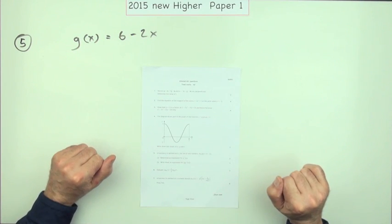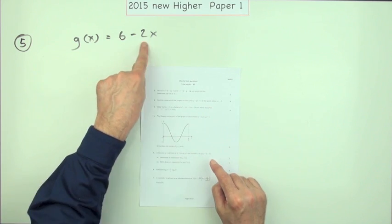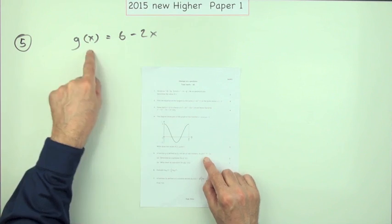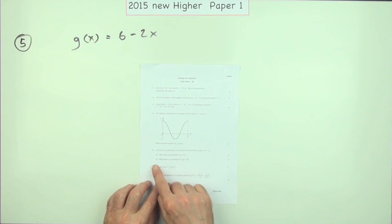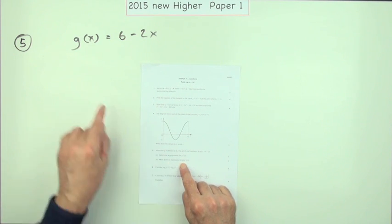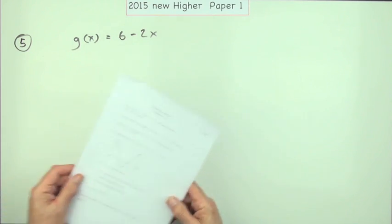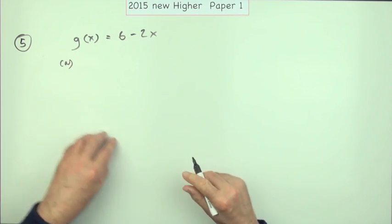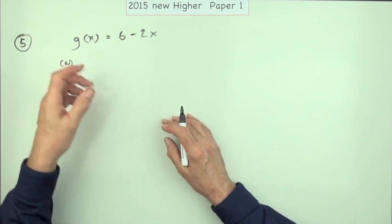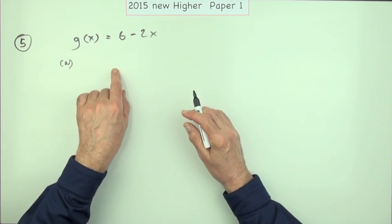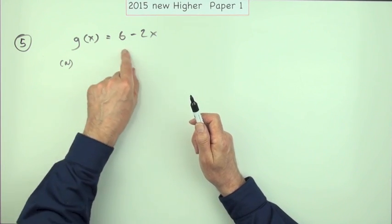Question five from the 2015 New Higher paper one — a three-mark question on functions. It was a very straightforward one. It gives you a simple linear expression as the formula for the function and asks for an expression for the inverse. There's also a part (b) asking for an expression for g acting on its inverse. You could do the inverse just by inspection, just by reversing the steps, but there are two marks for that result.